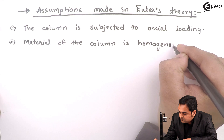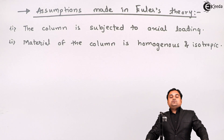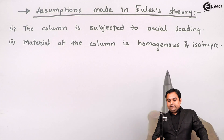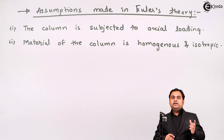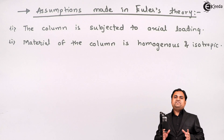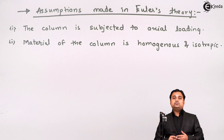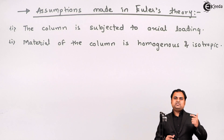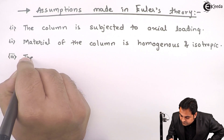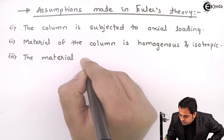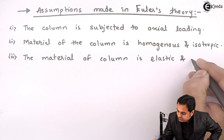The next assumption: the material of the column is homogeneous and isotropic. Homogeneous means having the same composition throughout — if a column is made of steel, it will remain steel throughout, so the theory is not applicable to composite columns with two different materials. Isotropic means the material will have the same modulus of elasticity in all directions: x, y, and z.